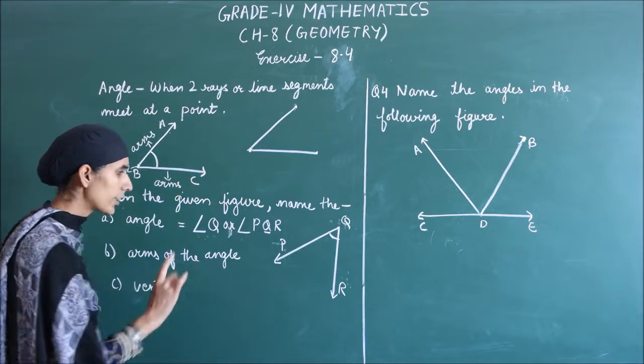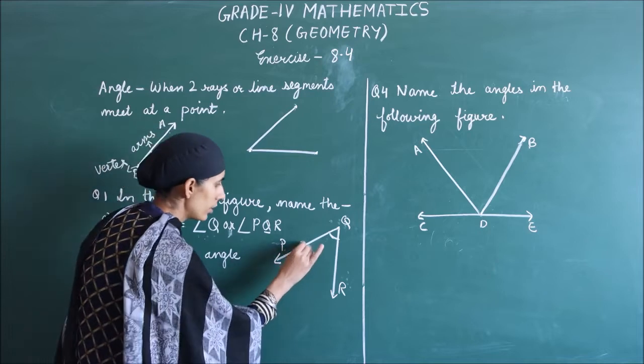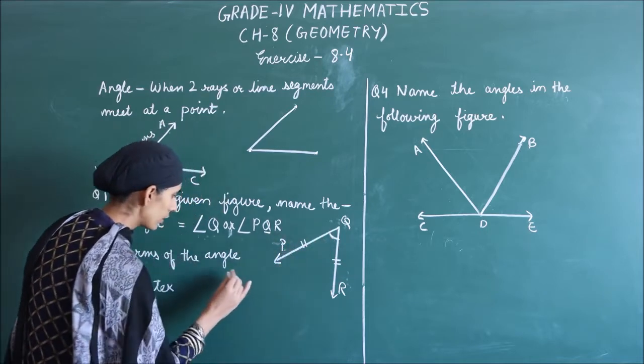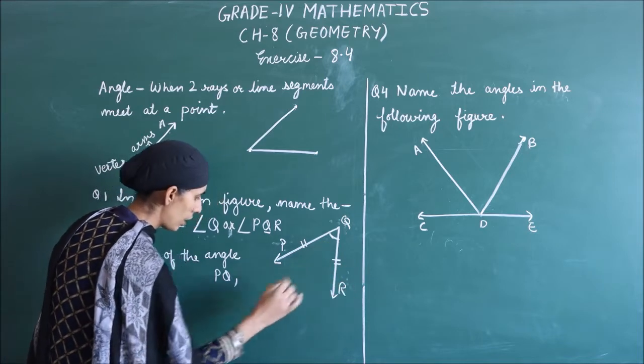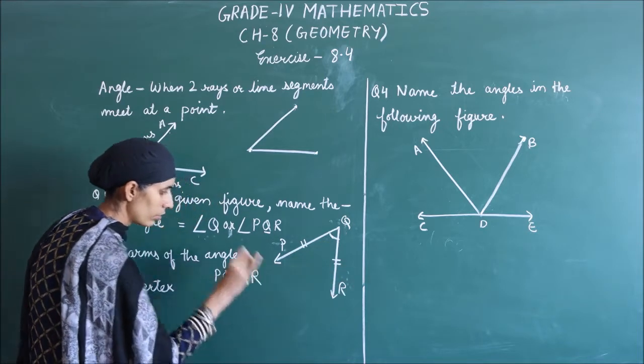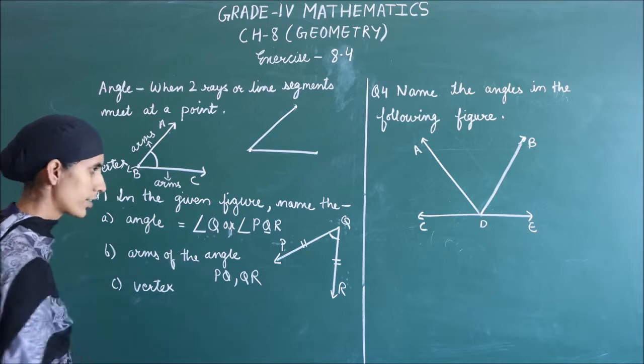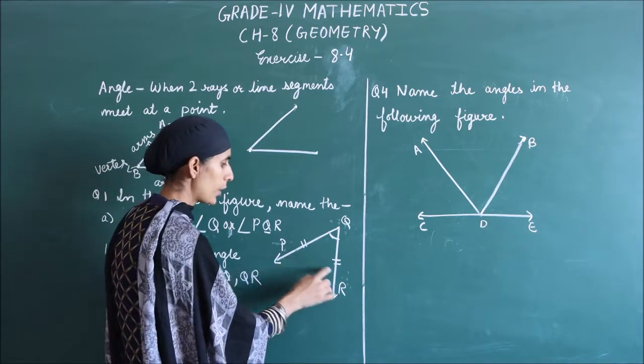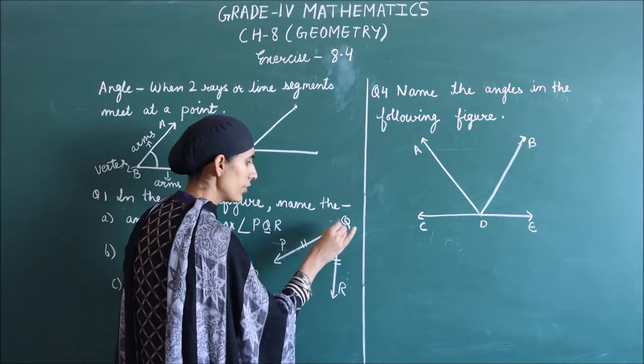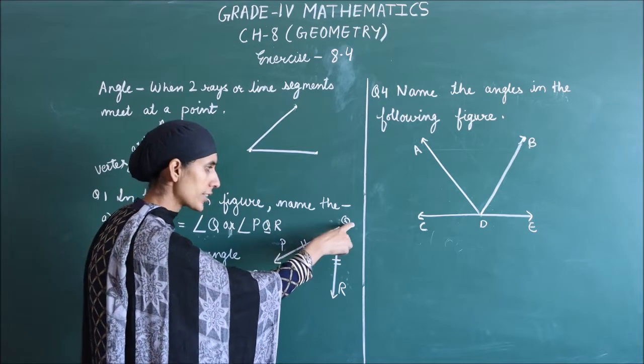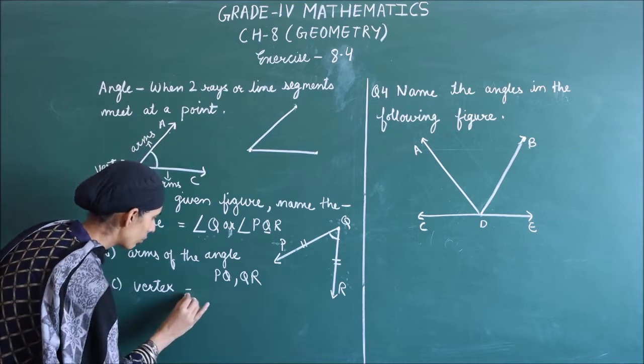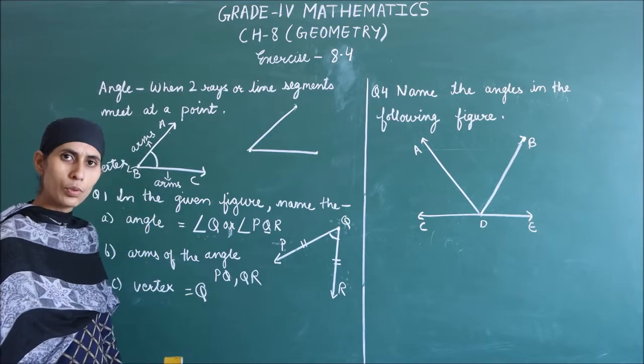Next, arms of the angle. I have to tell you these arms: PQ and the other arm QR. Next, vertex. I have to tell you where two rays meet. What we call vertex. Vertex is Q. You can write Q.